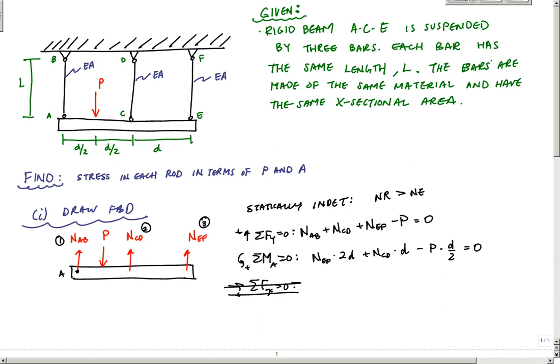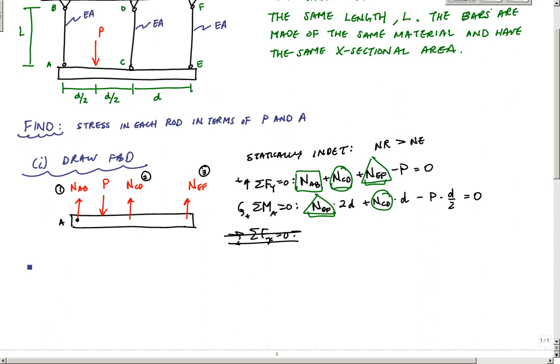So I see here that my unknowns are NAB, NCD, and NEF. I need another equation. That other equation is going to come from a compatibility relationship or a kinematic equation. Kinematic equation just means some relationship with respect to its deformation.